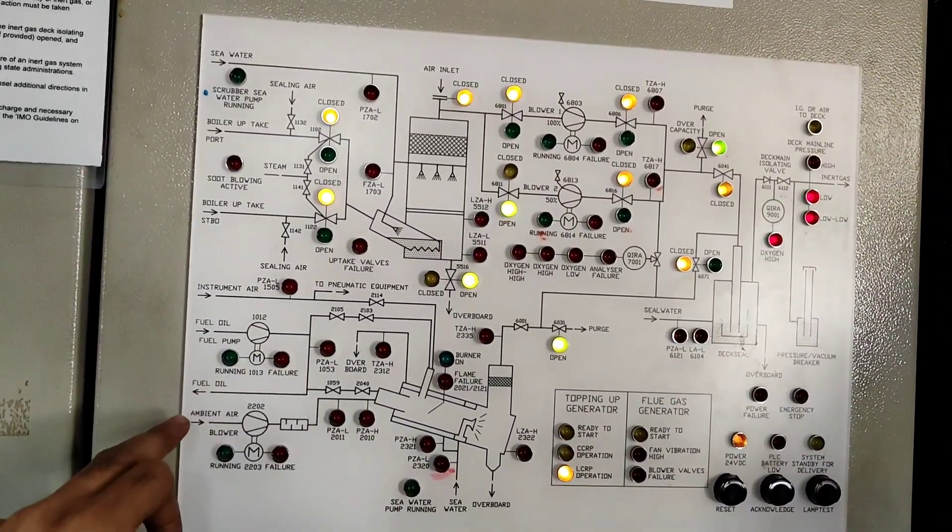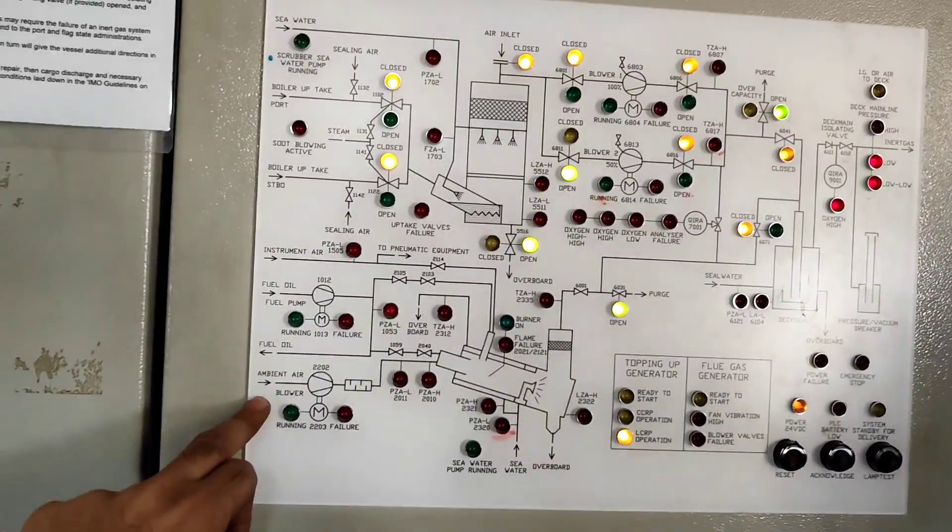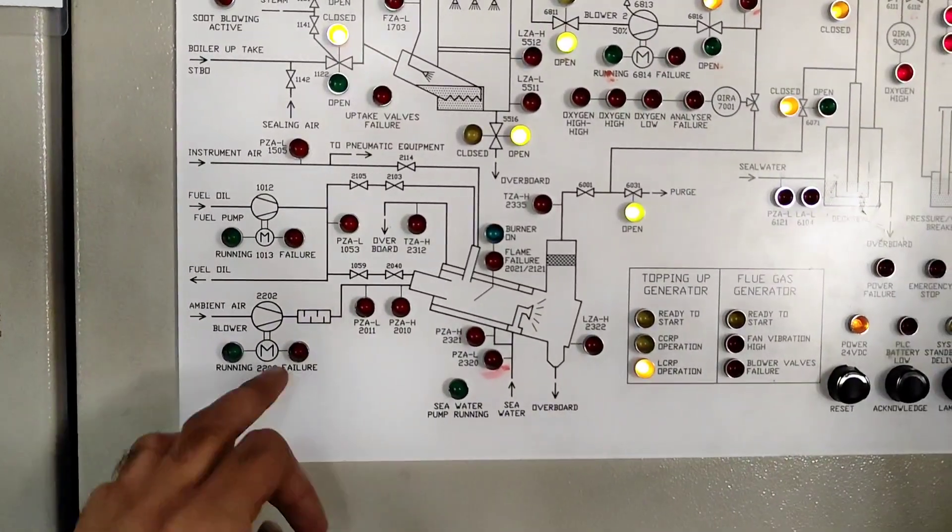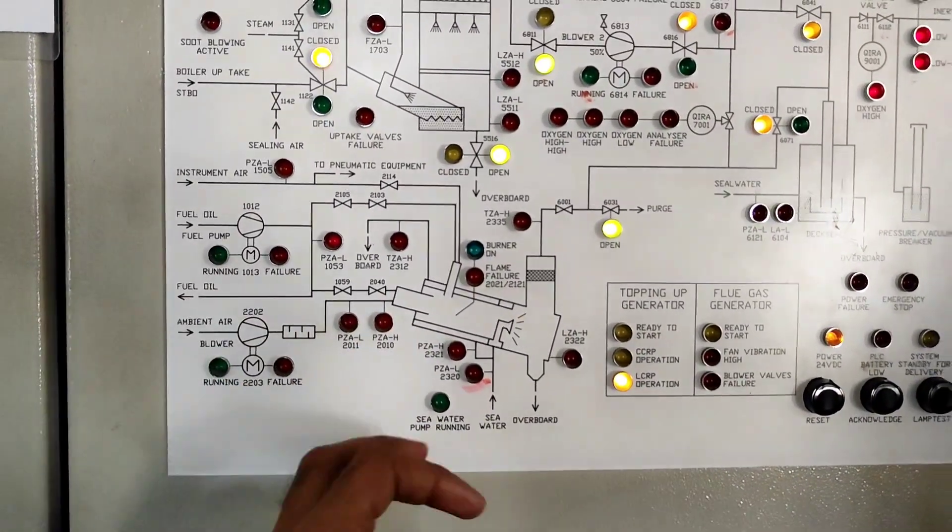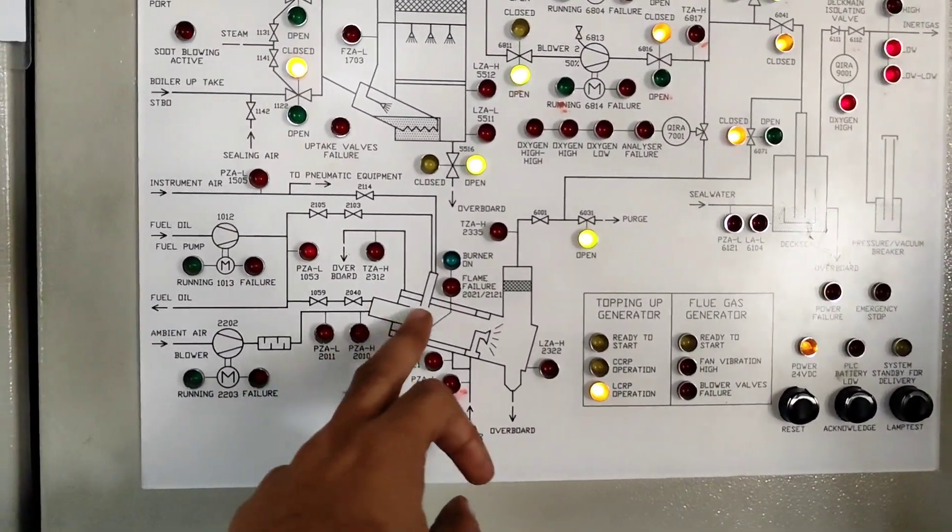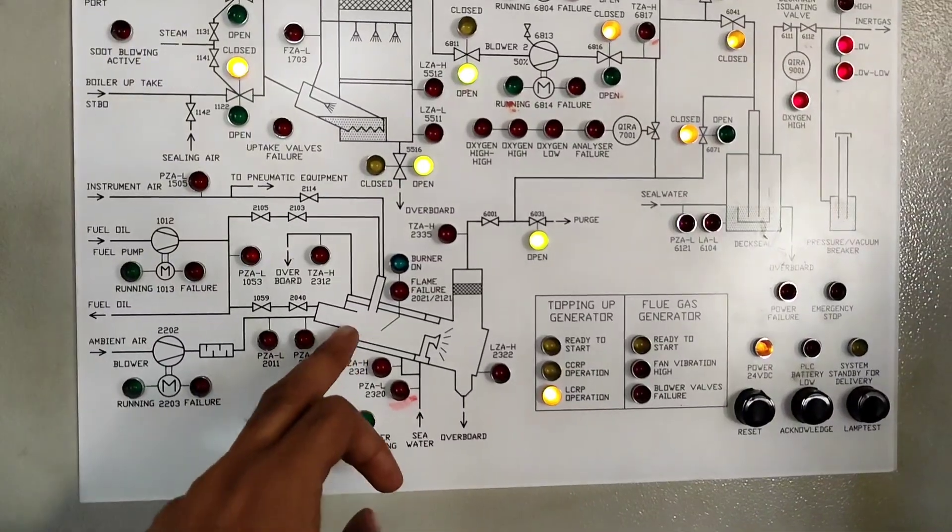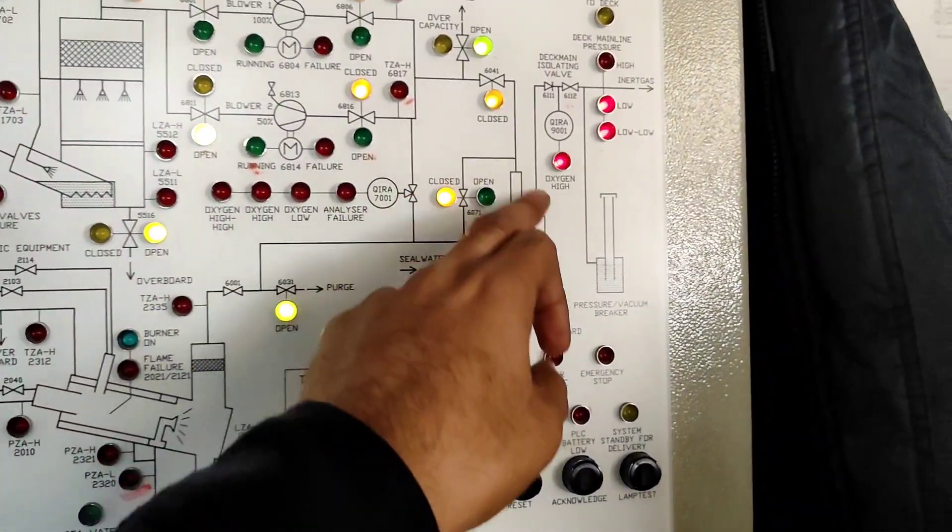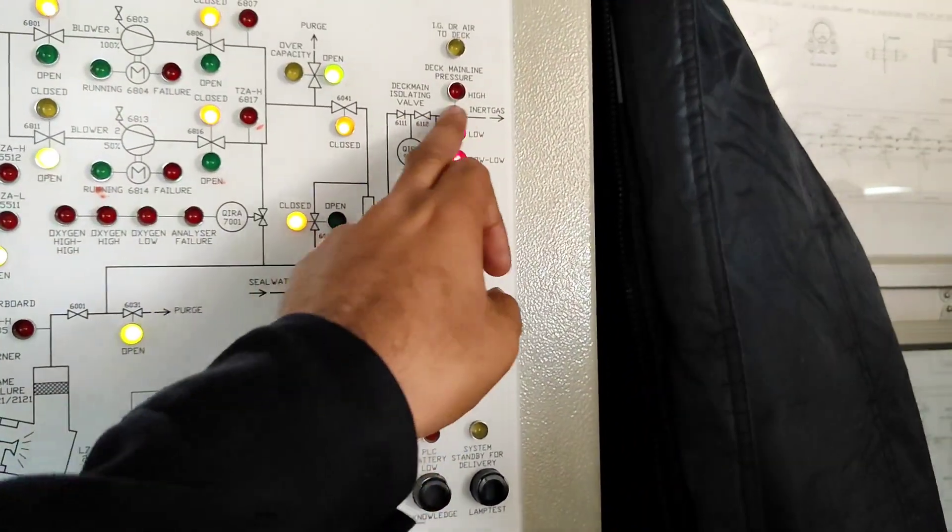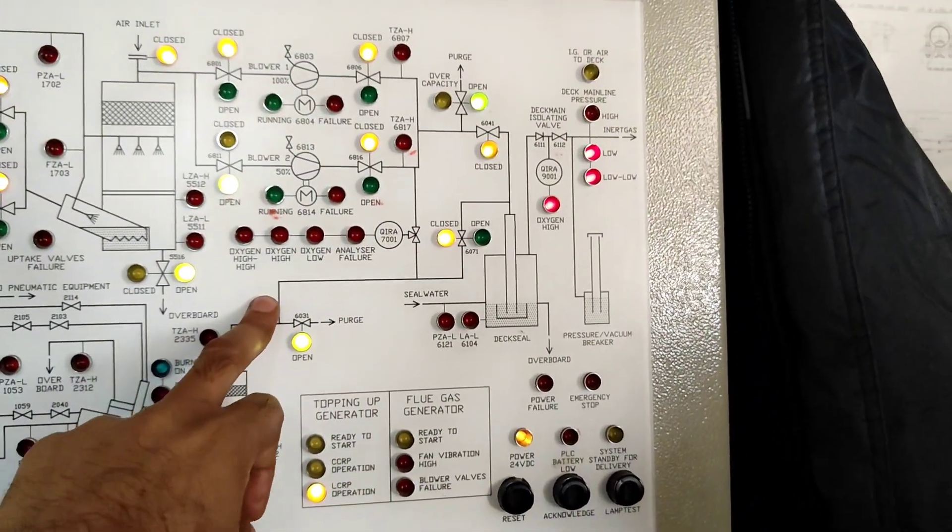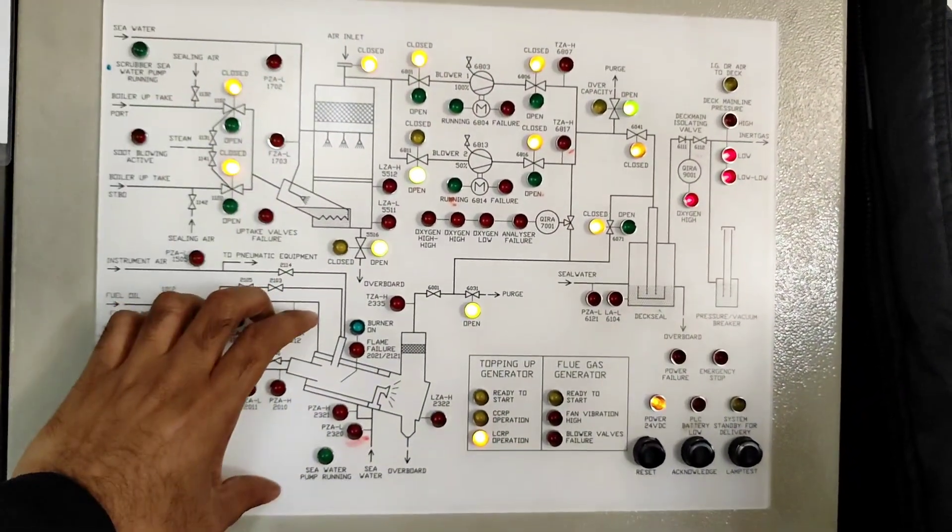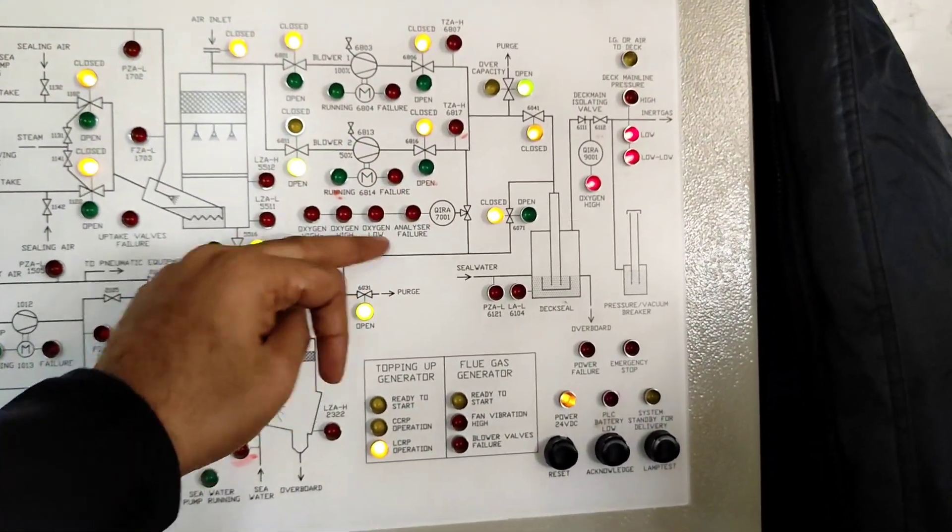So whatever soot is going to come it will wash away and it will go overboard. You can see here now the instrument air is also coming to IGG, fuel oil and ambient air. So all these things are there in IGG same like boiler operation but it is a small plant only for topping up. So from here once the IG is prepared it will go like this, it will go to deck seal and it will follow the same path. Once this is running this unit is running, this will not run because you can see this is connected both here to deck seal, this is also connected here.